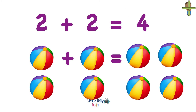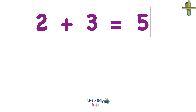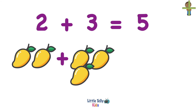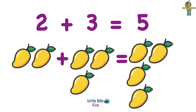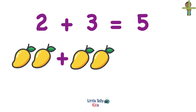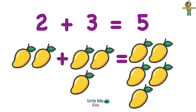2 balls and 2 balls equals 4 balls. Now let's solve another addition problem. 2 plus 3 equals 5. Let's try to understand with the help of an example. So 2 mangoes plus 3 mangoes equals 1, 2, 3, 4, 5. 5 mangoes. Let's look at it once again. 2 mangoes and 3 mangoes equals 5 mangoes.